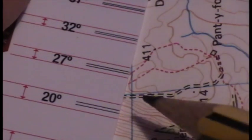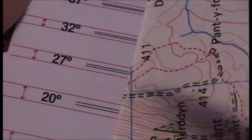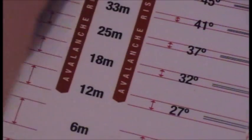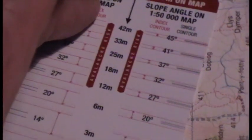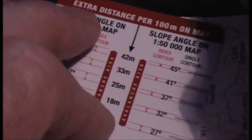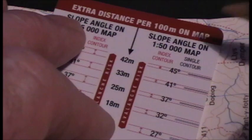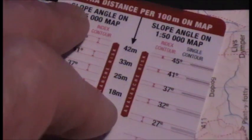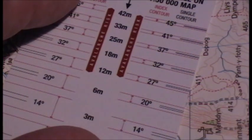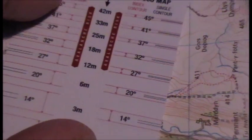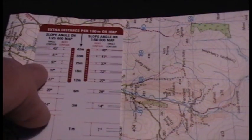So now I can work out that the slope angle is 20 degrees. And if I just slide across, you can see there on top of the map, the extra distance travelled per 100 metres climbed on the map will be 6 metres. And that's it — very, very simple to work out the actual angle of slope on an Ordnance Survey map.